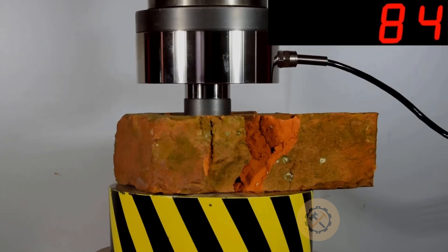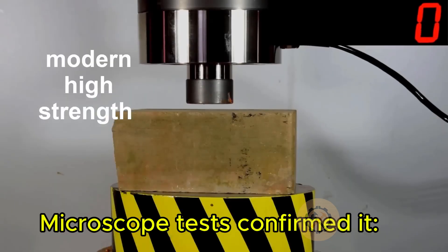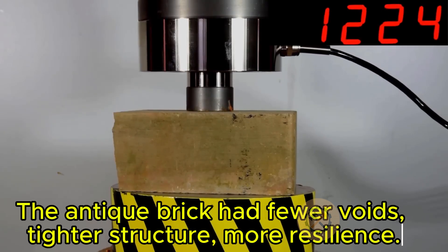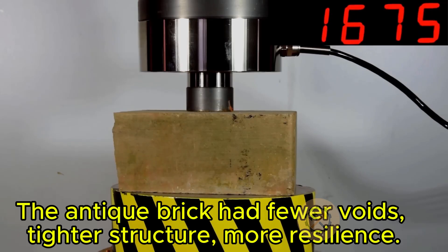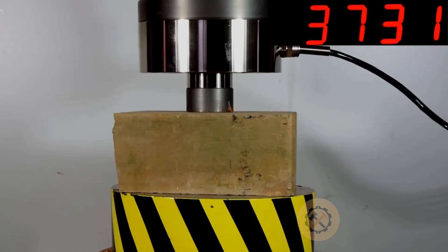We then analyzed all three samples under a microscope. The modern brick had consistent pores and regular texture. The 1960s brick had visible imperfections and air pockets. But the antique brick showed tightly packed particles, fewer voids, and an unusually strong microstructure.